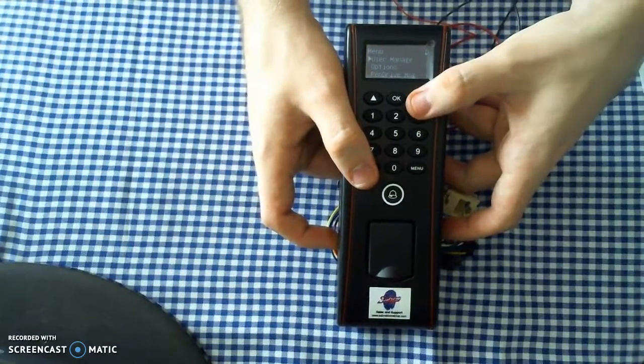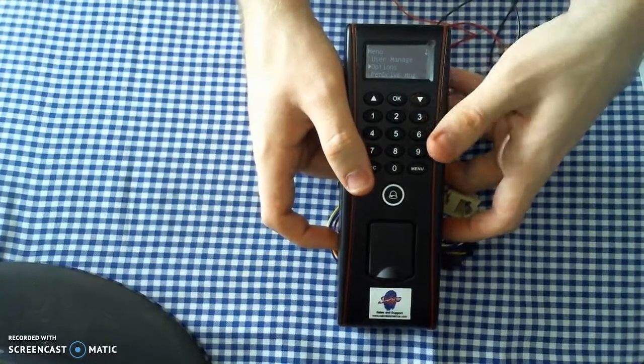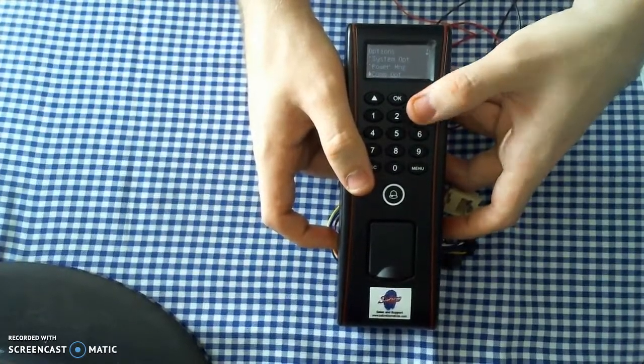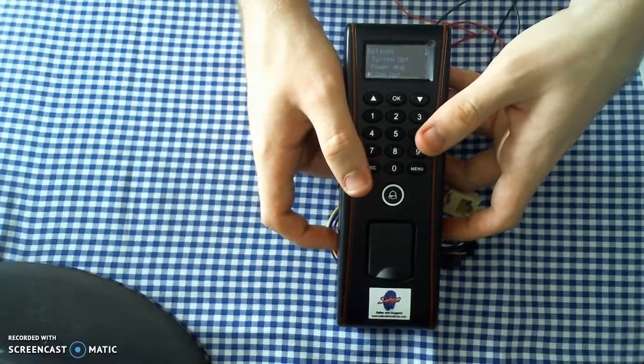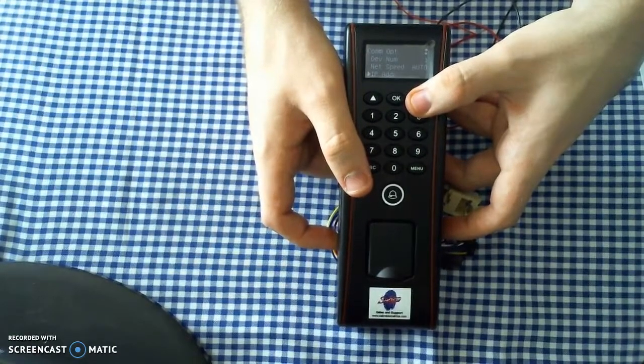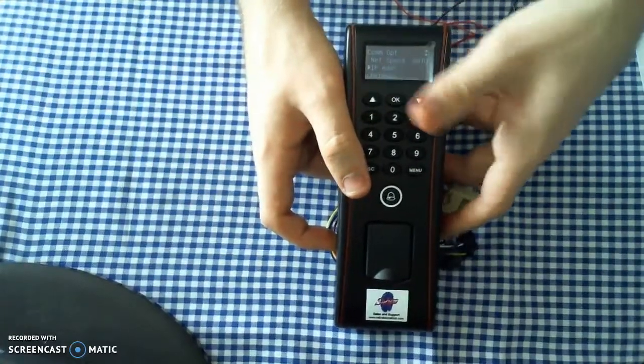We're going out of there. We're going to go to Options. We're going to go down to Comm Options, and we're going to go down to IP Address.